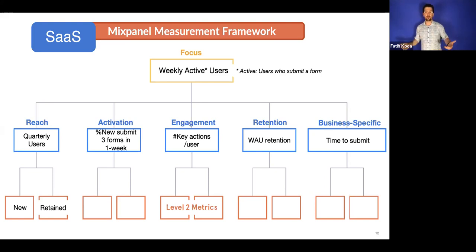Last one, business-specific metric. This is a B2B business, it's a SaaS business. Ease of use is important and we can measure that ease of use by time to submit, the time that a user spends from landing to product to submitting a form. We should ideally reduce that time so users will spend less time on our product trying to figure out where to click, what to input.